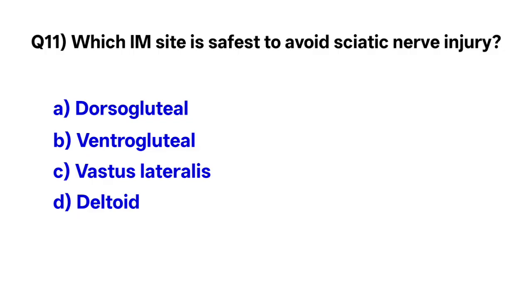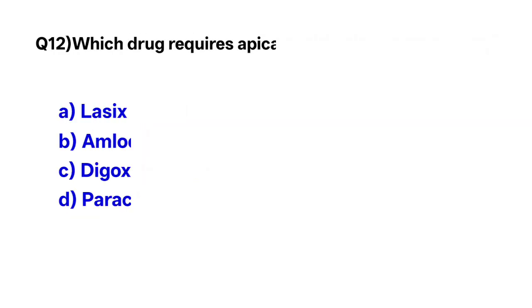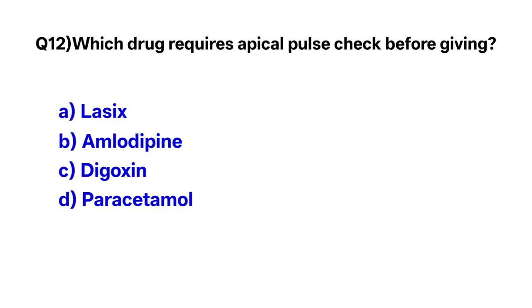Question number eleven: Which intramuscular site is recommended to avoid sciatic nerve injury? The correct option is D, ventrogluteal.